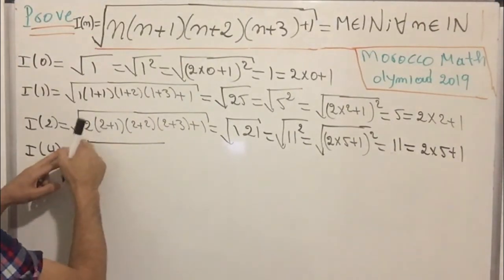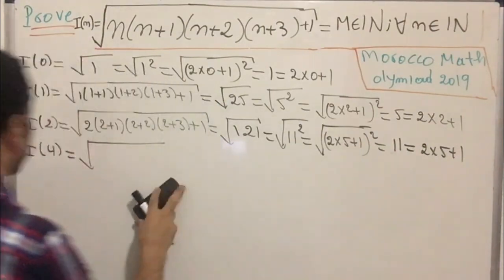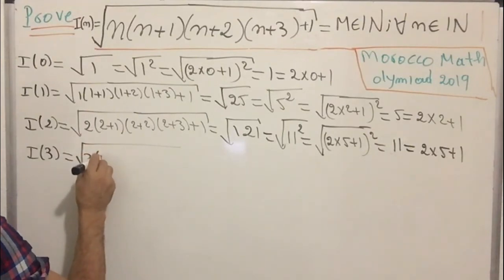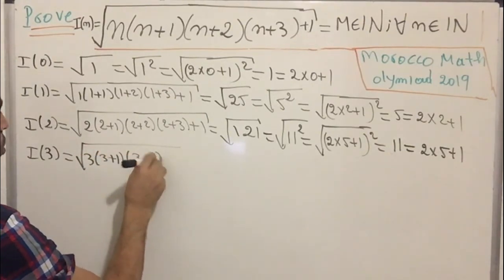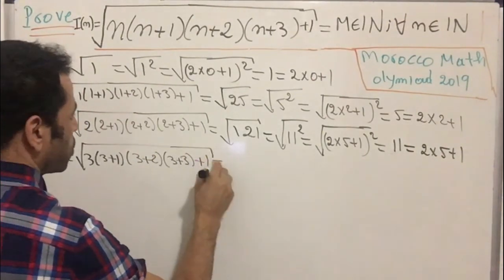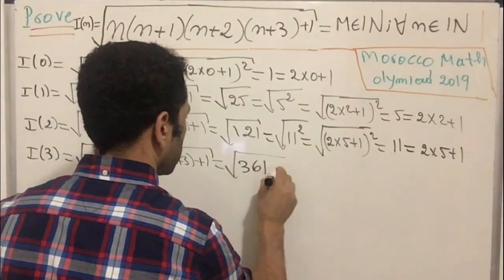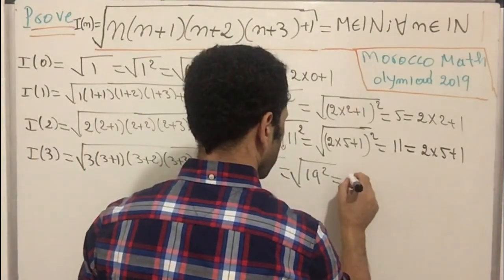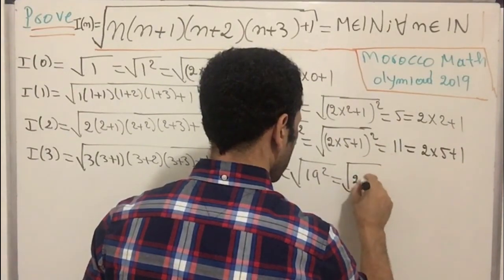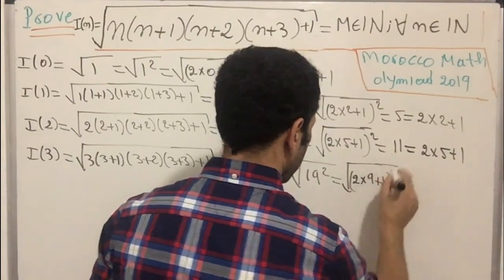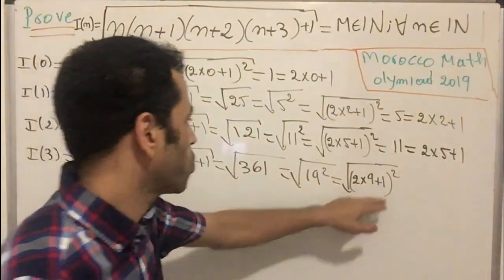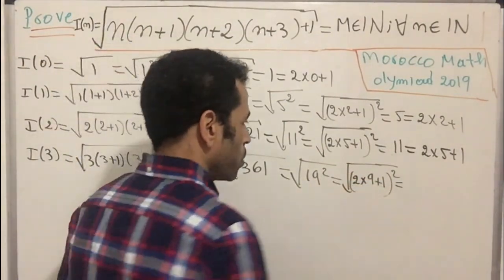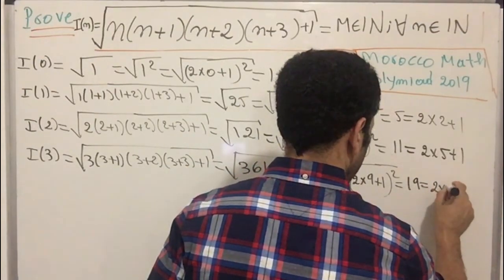Moving on to i(3): plugging in 3 gives us 3×4×5×6 plus one, which equals 361 — that is 19². It can be written as (2·9+1)². The square root cancels with the square, so i(3) equals 19, or 2·9+1.